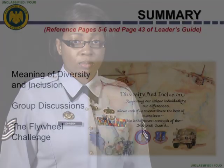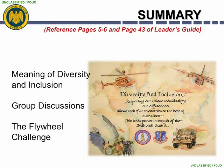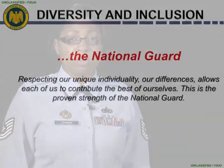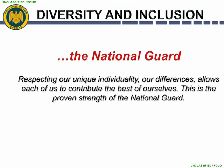Now let's take this dialogue and the action plans you just discussed and start institutionalizing diversity in the National Guard. With the help of our Leader's Guide, we briefly discussed the basic meaning of diversity and inclusion to the National Guard, creating a cultural climate to optimize organizational strength. We then took these basic principles and engaged in reflective group discussion. Finally, we accepted the flywheel challenge and further reflected on our individual behaviors to create a plan of action aimed to generate momentum towards positive change. Diversity and inclusion, respecting our unique individuality and our differences, allows us each to contribute the best of ourselves. This is the proven strength of the National Guard.